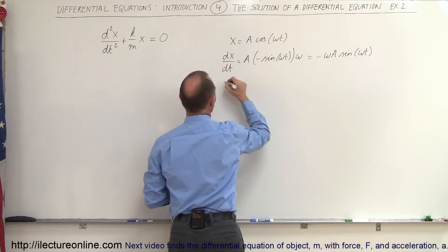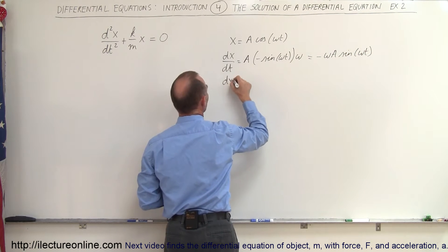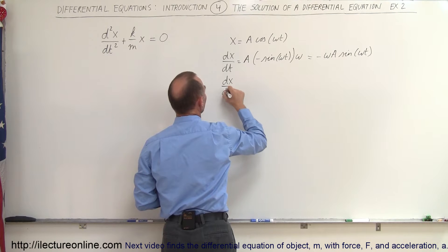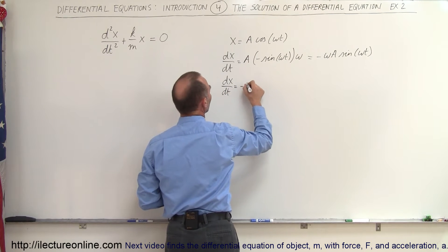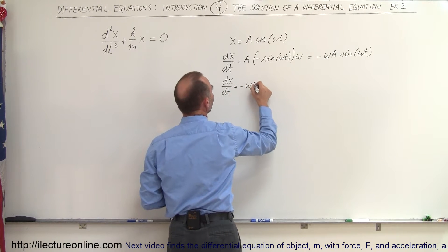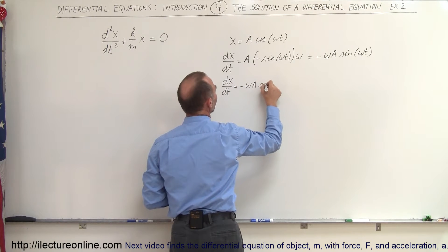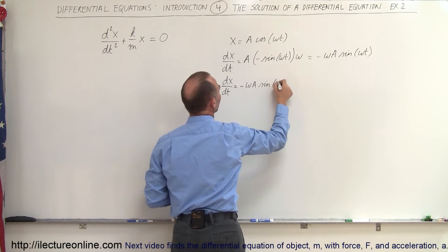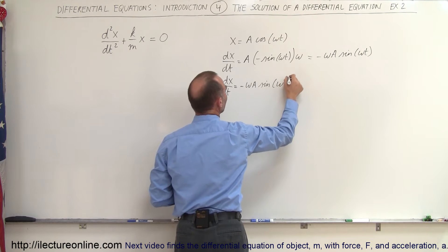So dx/dt is equal to minus omega times A times the sine of omega t.